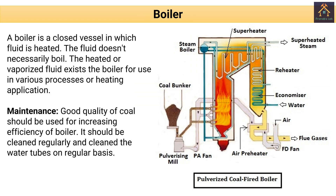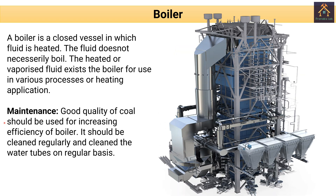Next, the boiler. The boiler is a vital part of a thermal power plant. A boiler is a closed vessel in which the fluid is heated. The fluid does not necessarily boil. The heated or vaporized fluid exits the boiler for use in various processes or heating applications. There are different types of boiler. You can see this is a basic block diagram of a boiler with various parts including primary air fan, forced draft fan, air pre-heater, economizer, re-heater, superheater, and steam drum. The maintenance of the boiler includes using good quality coal for increasing efficiency, cleaning it regularly, and cleaning the water tubes on a regular basis.